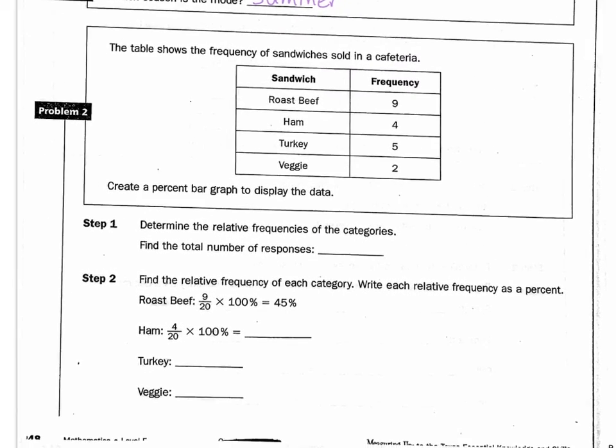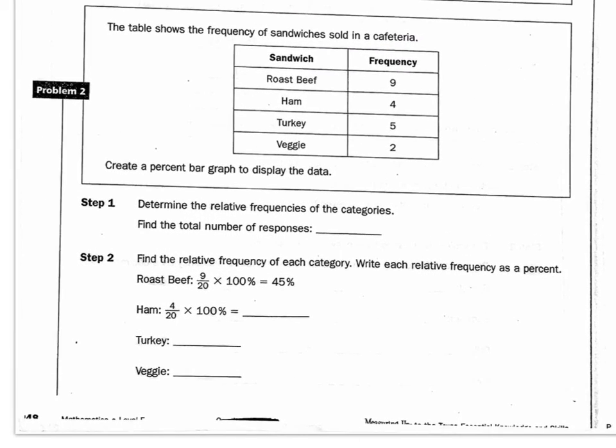Problem two. The table below shows the frequency of sandwiches sold in the cafeteria. Create a percent bar graph to display the graph. The first thing we have to do is find the total number, another way we just say it is the sum of the responses. So we have 9 plus 9 plus 2, that's 18 plus 2, 20. There are 20 responses.